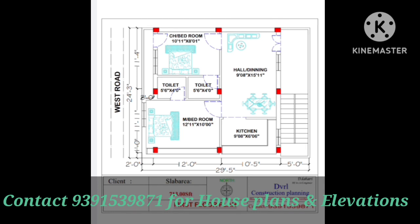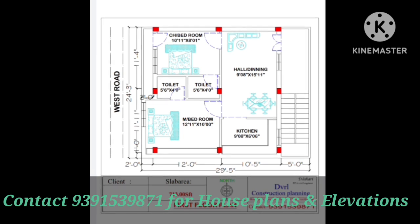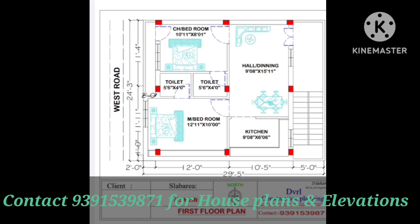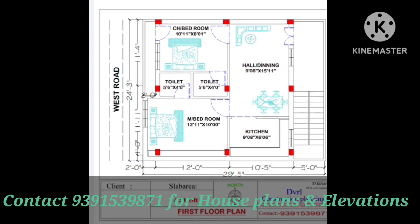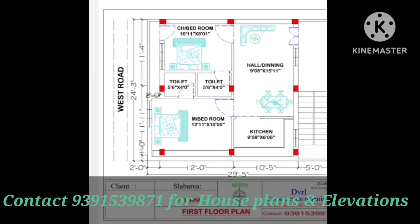We have two designs. We use a little elevation. This is a 2BHK. We have steps of 5 feet. After the master bedroom, we have 11 feet by 10 feet. In the middle, we have toilets — each toilet is 5 and a half by 4 feet.